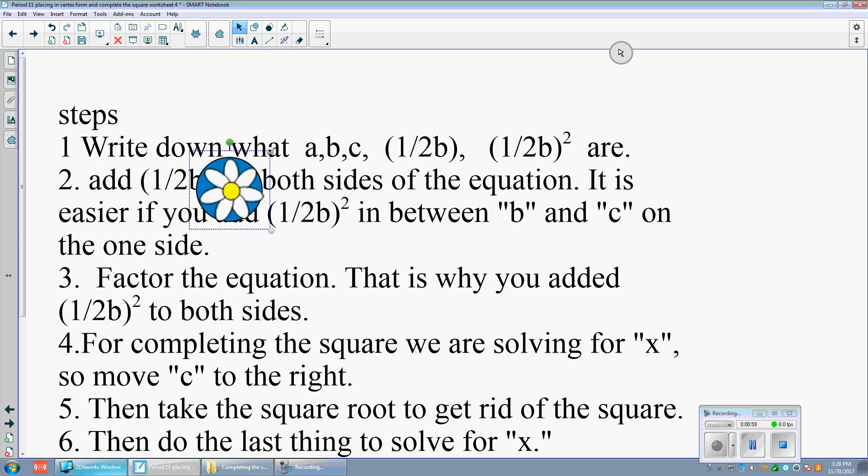Step number one, write down what a, b, c, half of b, and half of b squared are. Step number two, add half of b squared to both sides of the equation. It's easier if you add half of b squared between the b and the c on one side.